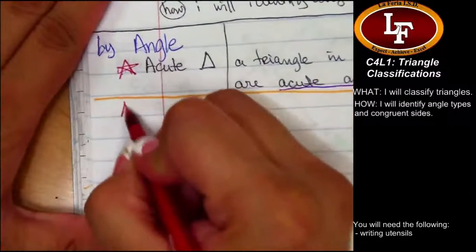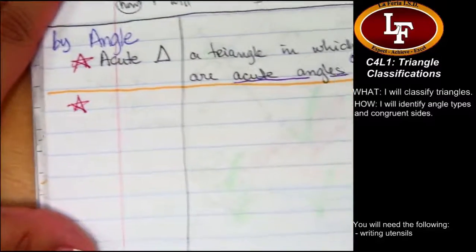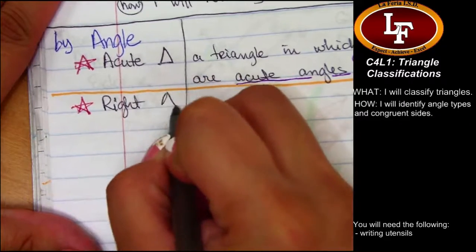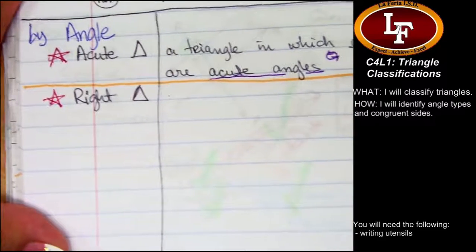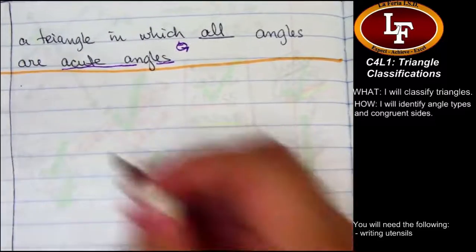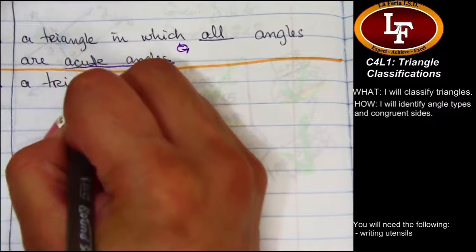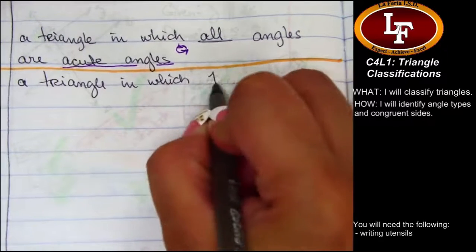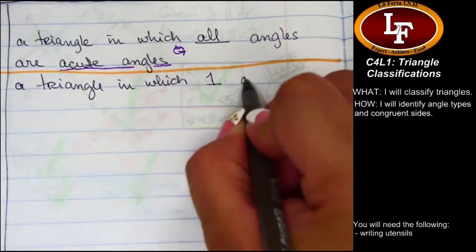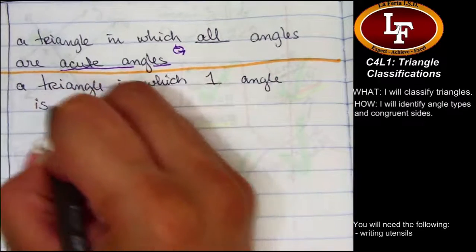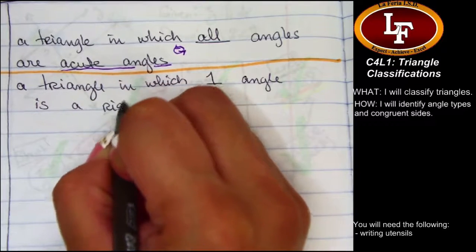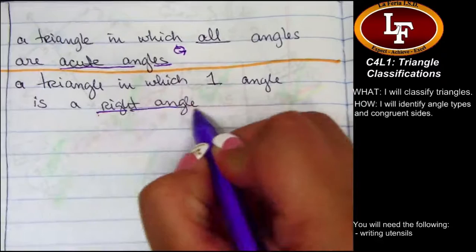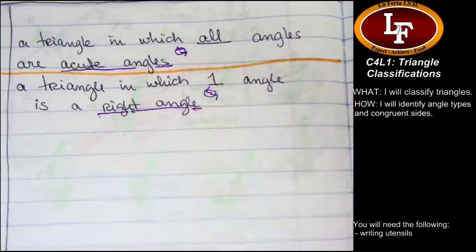Our next classification by angle, bless you, is going to be the right triangle. May I draw you a right triangle? Not yet. A right triangle is a triangle in which one and only one angle is a right angle. Again, if you do not recall what a right angle is, please recall yourself back to Chapter 1, Lesson 4A.